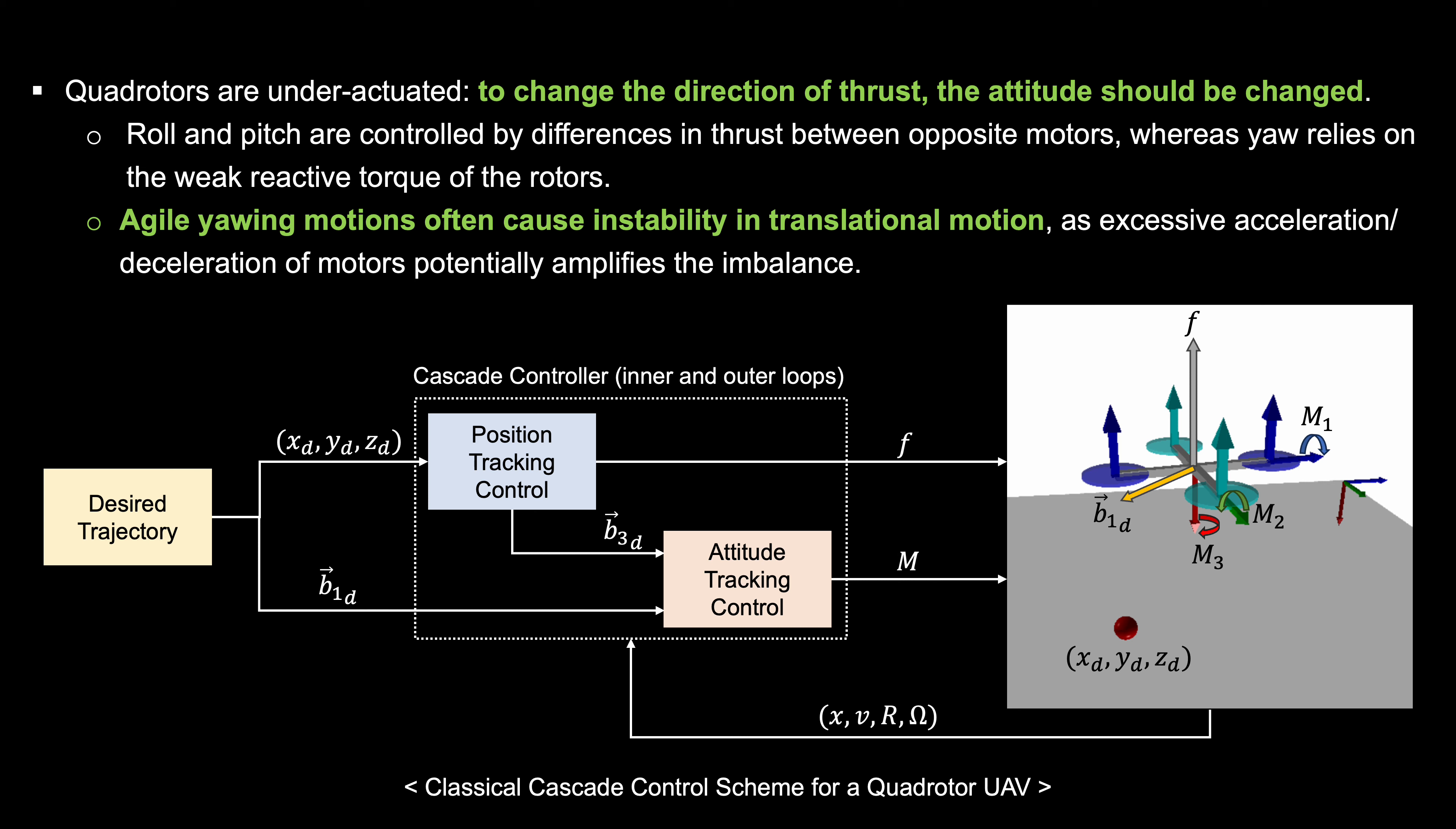Quadrotors are underactuated systems, which means to change the direction of thrust, the attitude of the vehicle has to change. Specifically, roll and pitch are controlled by differences in thrust between opposite motors.